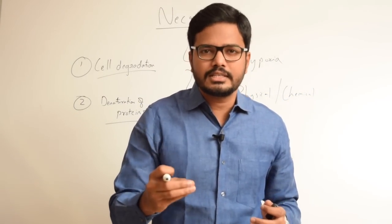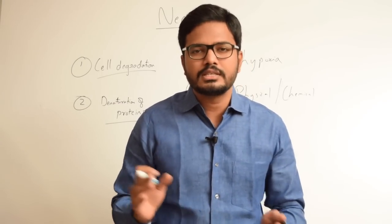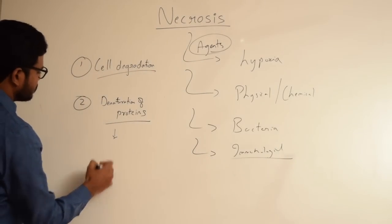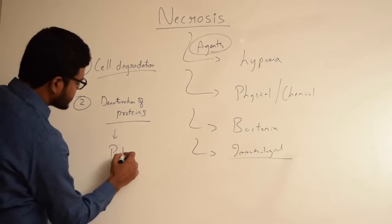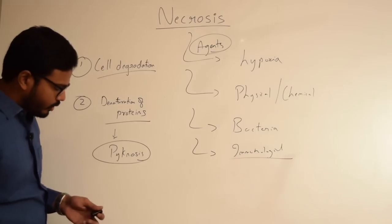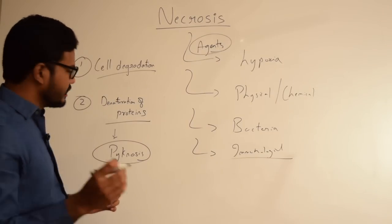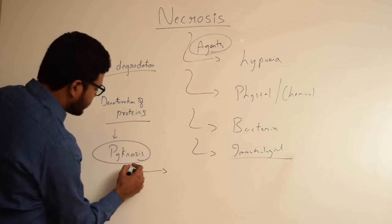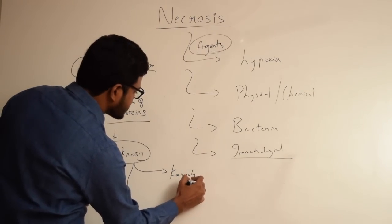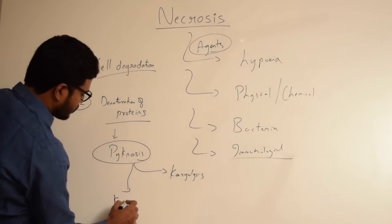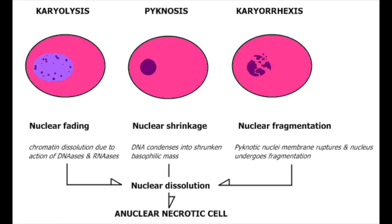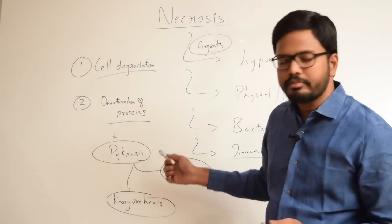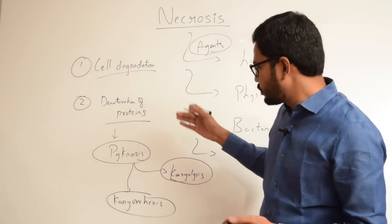There are certain characteristic changes happening within the nuclear material of a cell which has undergone necrosis. The first is condensation of nuclear chromatin, which is termed as pyknosis. Pyknosis is nothing but condensation of nuclear chromatin material within a necrotic cell. This pyknosis can either lead to karyolysis, which is dissolution of that nuclear chromatin material, or karyorrhexis, which is fragmentation of that chromatin material into various granular clumps.